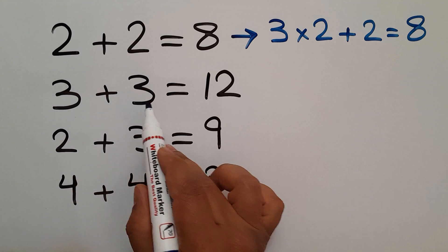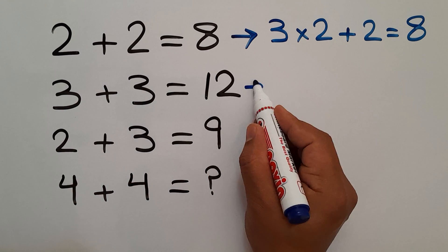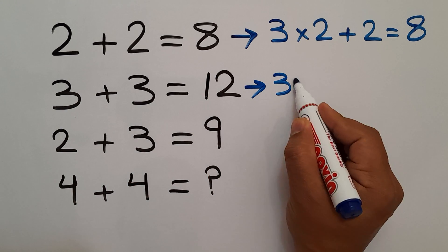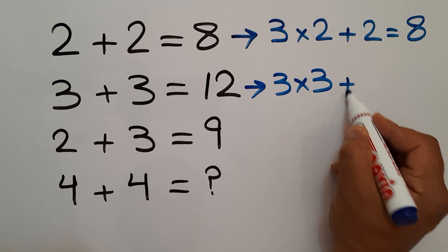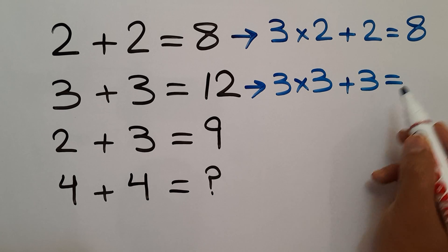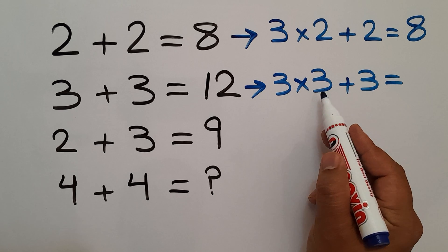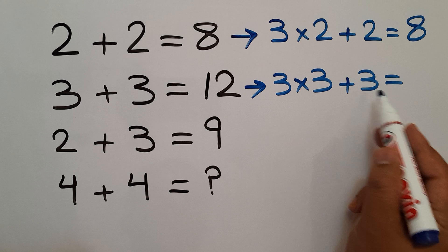In the second line we have 3, 3, and 12. 3 times 3 plus 3 equals... 3 times 3 is 9, and 9 plus 3 gives us 12, the right hand side number.